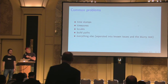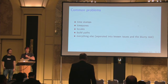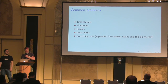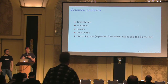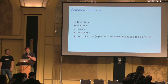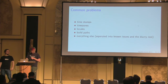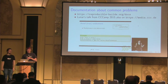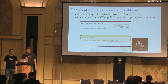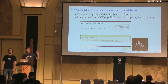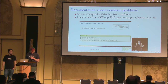The problems we find are mostly timestamps, timestamps, timestamps, then timezones, locales, and build paths. All documentation tools — PDF or HTML generators — embed timestamps and timezones. Lunar gave a nice talk at the last camp covering common problems and solutions, like calling gzip with -n to make the timestamp go away in gzip archives. This is all in that talk and on our web page as well.